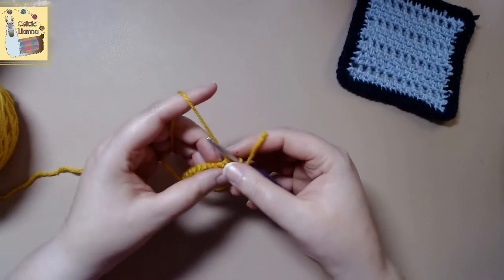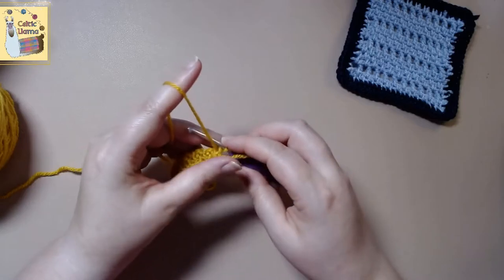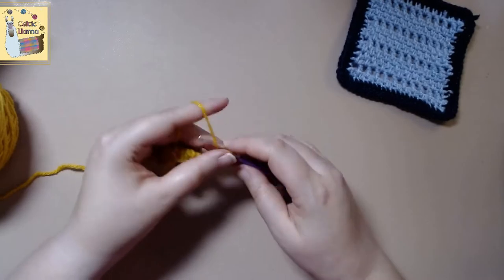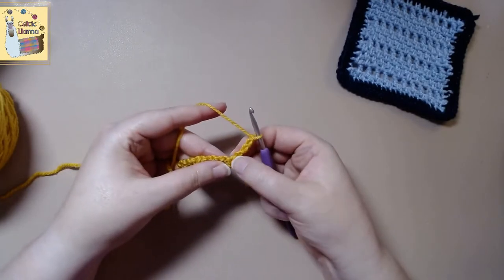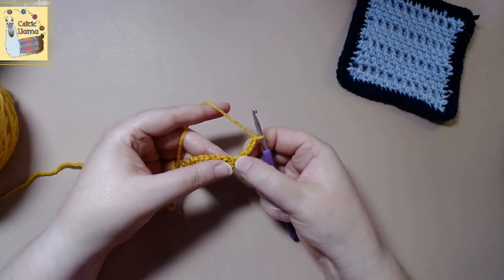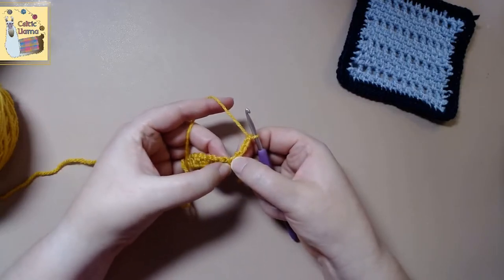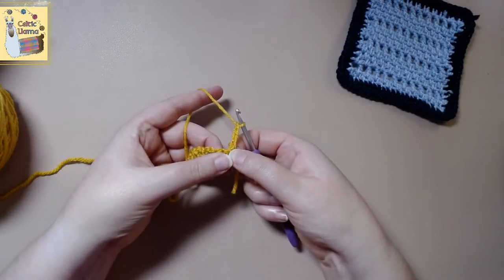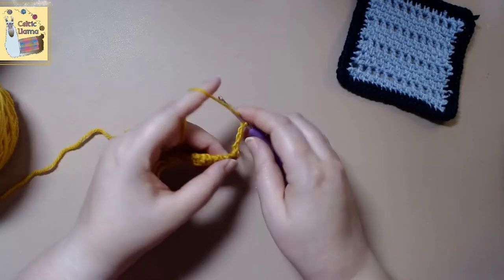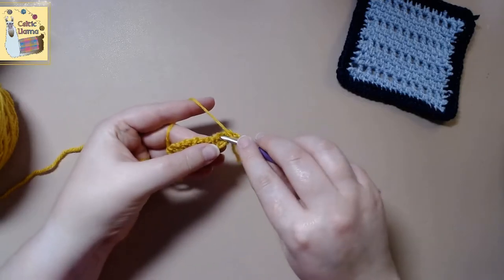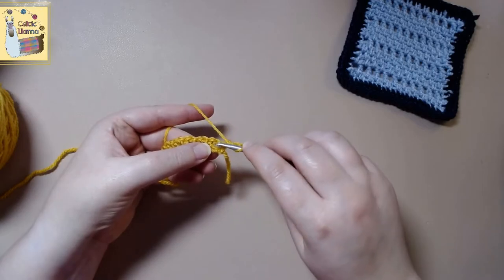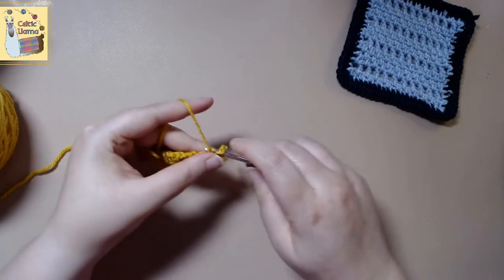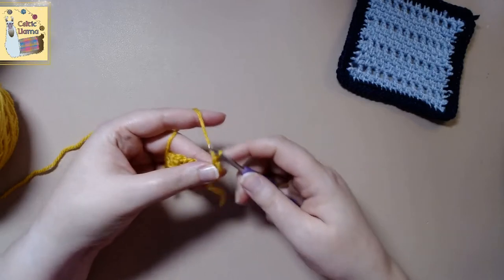So row two. We are going to want to chain four. And then in the chain one gap we will want to do our first double crochet. So you kind of got to pull it apart a little bit to see it. But we'll yarn over and do our first double crochet in that gap. So again right there.